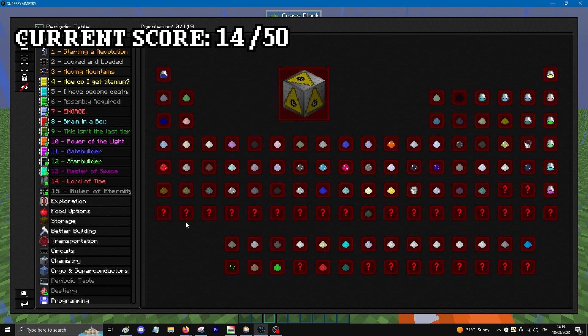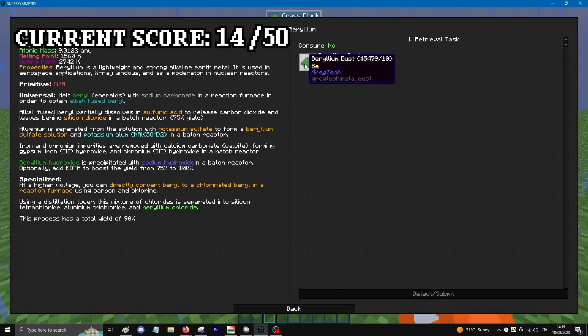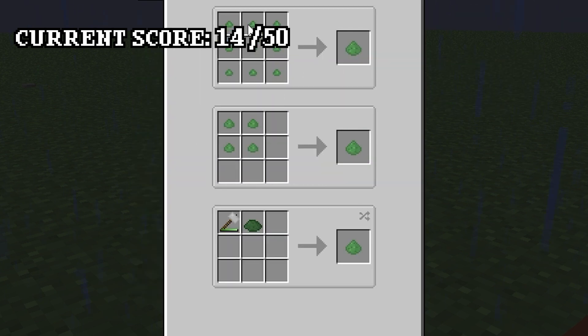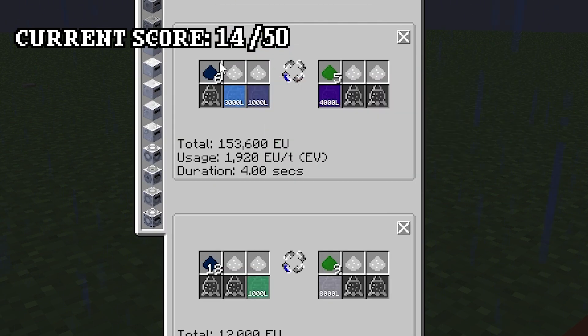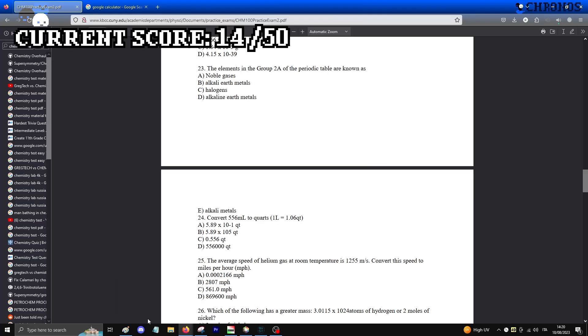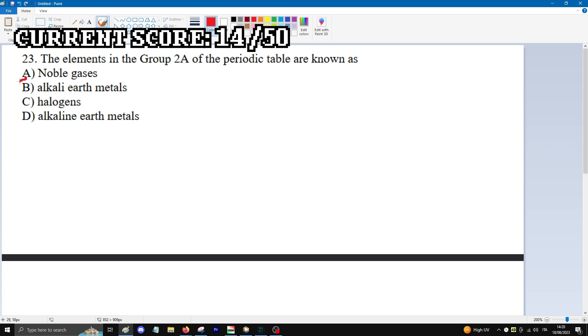I was told to check out the second row of the periodic table. GregTech says that dysprosium here takes about a gillion steps to make, which is based. What does based mean? Alkaline.